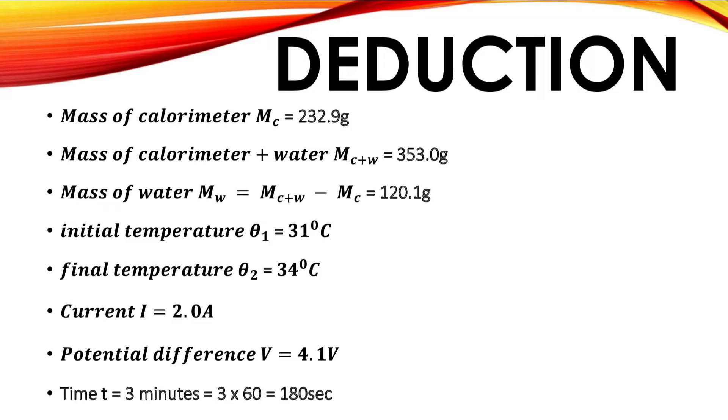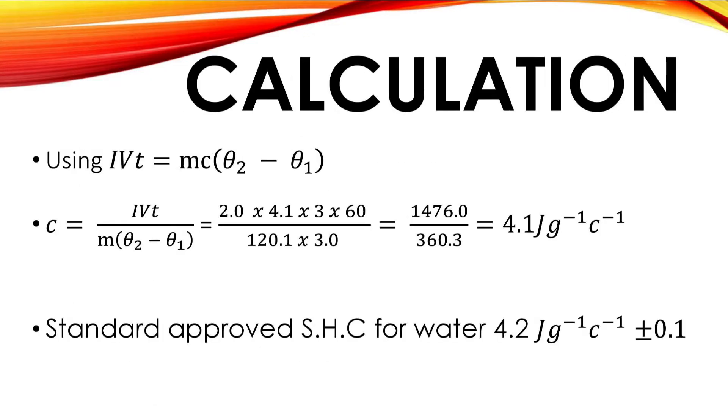The mass of the calorimeter which we got is 232.9 grams, and then the mass of the calorimeter plus water we got is 353.0 grams, then the mass of the water is 120.1 grams. That is, if we do the subtraction between the first two we'll get 120.1 grams. Then the initial temperature that we recorded was 31 degrees Celsius, and then the final temperature recorded was approximately 34 degrees Celsius. The current reading on the ammeter is 2.0 amperes while the voltmeter reading is 4.1 volts. Then we passed on this current for three minutes.